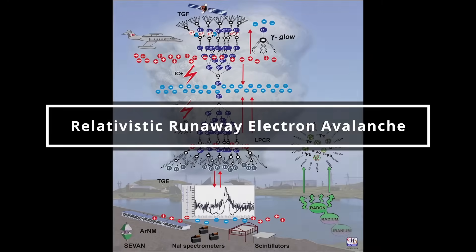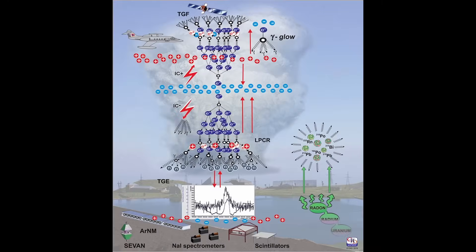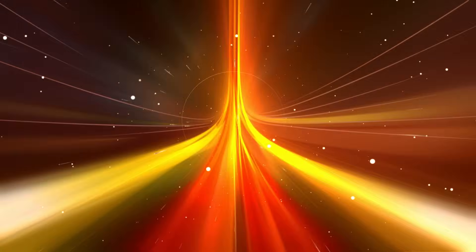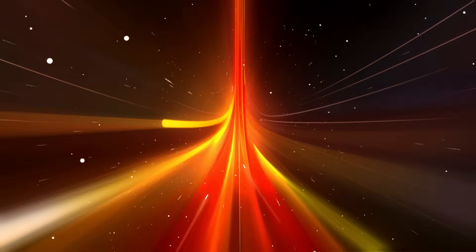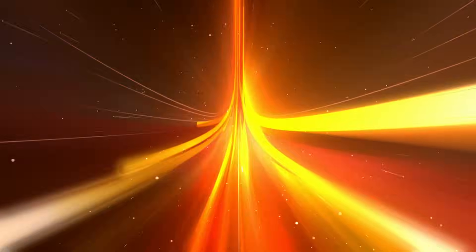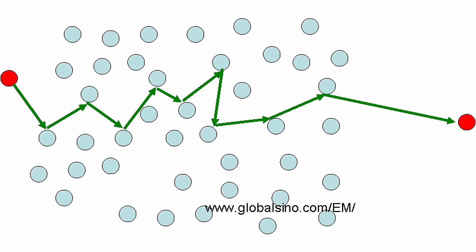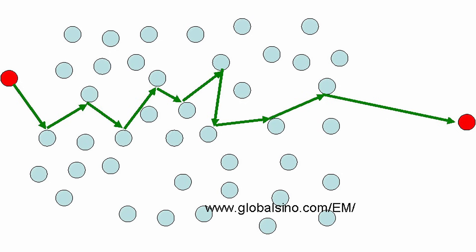Electrons suspended in the air typically have a mean free path of about 1 centimeter. When these electrons attain velocities approaching a fraction of the speed of light, their mean free path can increase by up to 100 times.